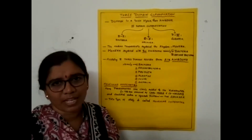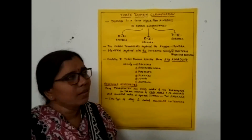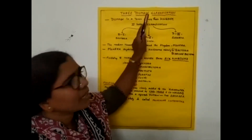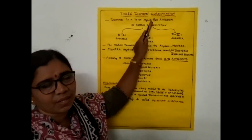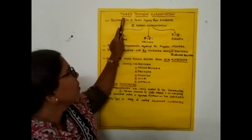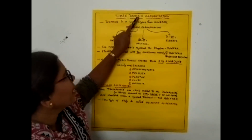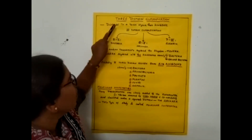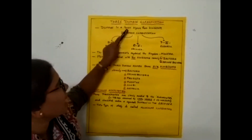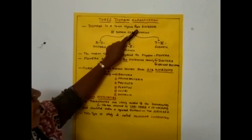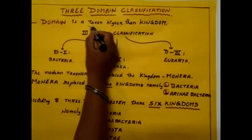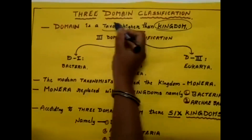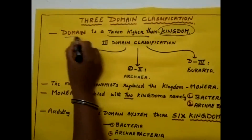Welcome to our today's session. This is the 3-domain classification. Before going into that, what is the meaning of domain? Domain is a taxon higher than the kingdom — higher than the kingdom — that is called the domain.